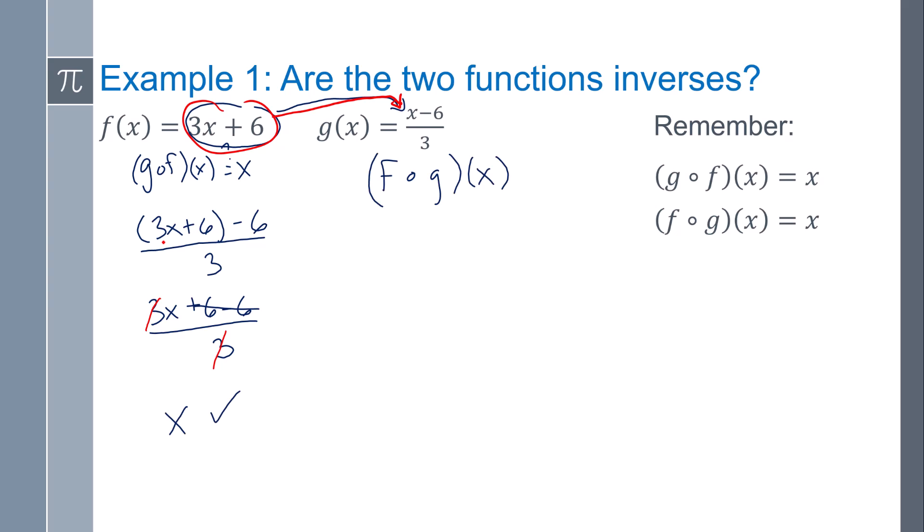And I could do the reverse. I could then take my g function and plug it into my f function. I'm plugging in for x there. Three times that function, the 3s cancel out, and then the 6s cancel out, and so I'm left with x. So we know their function, their inverses of each other, if they undo each other.